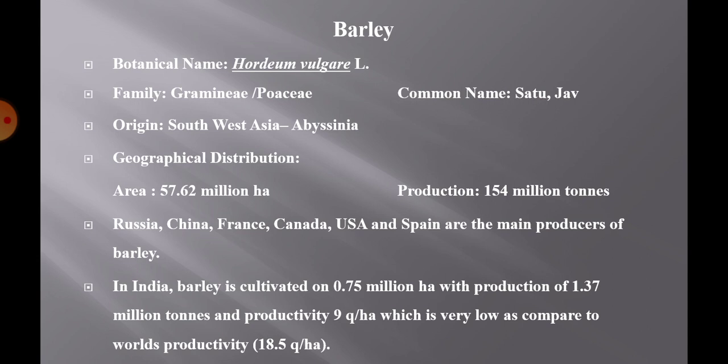Now geographical distribution. Barley is one of the most important cereals of the world and it is cultivated in almost all parts of the world except the tropical region. In the world, this crop is cultivated in about 57.62 million hectare area with a production of 154 million tons and productivity of 18.5 quintal per hectare.